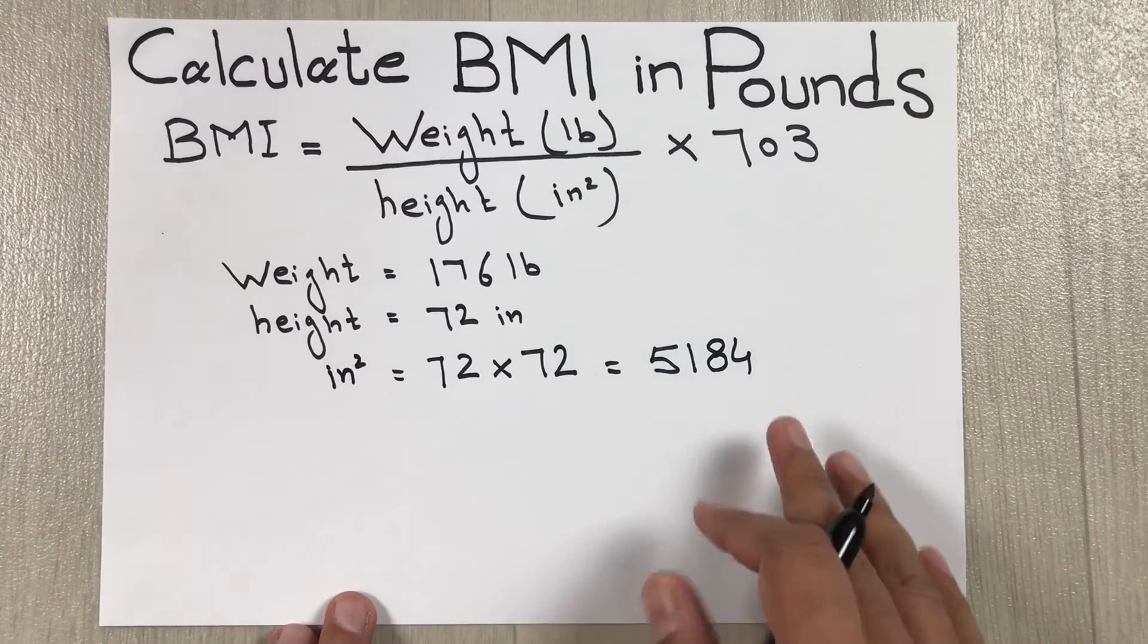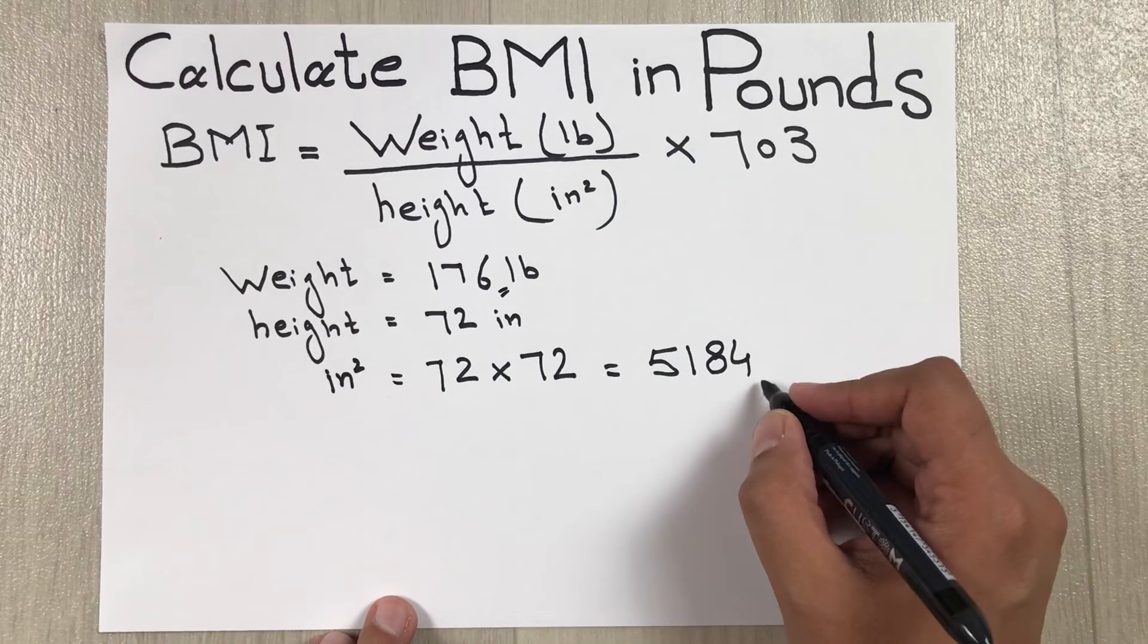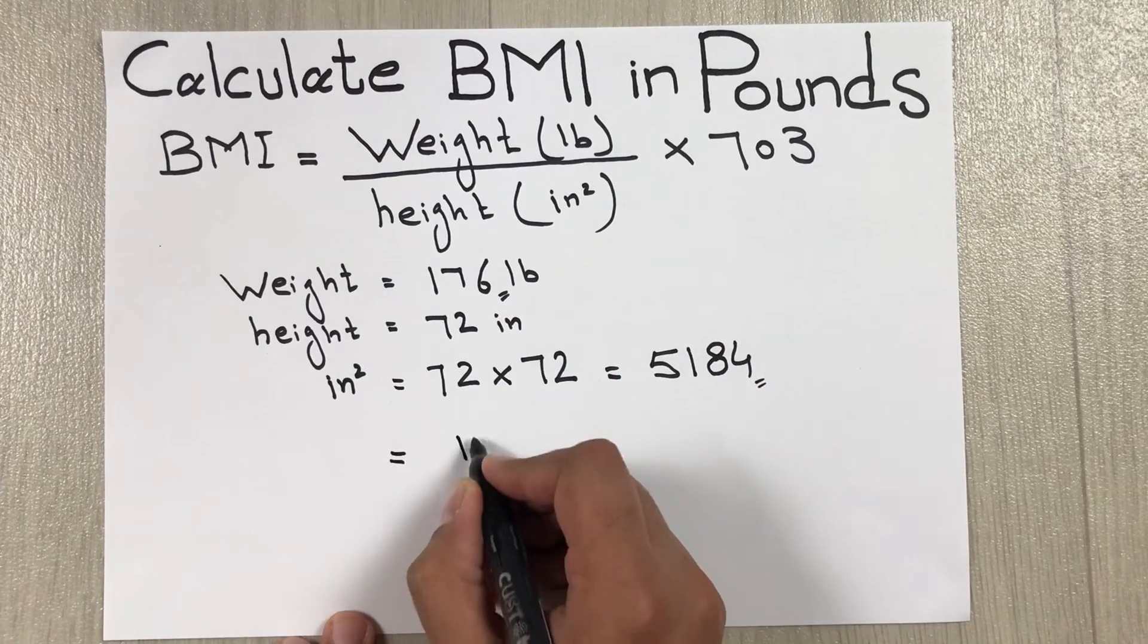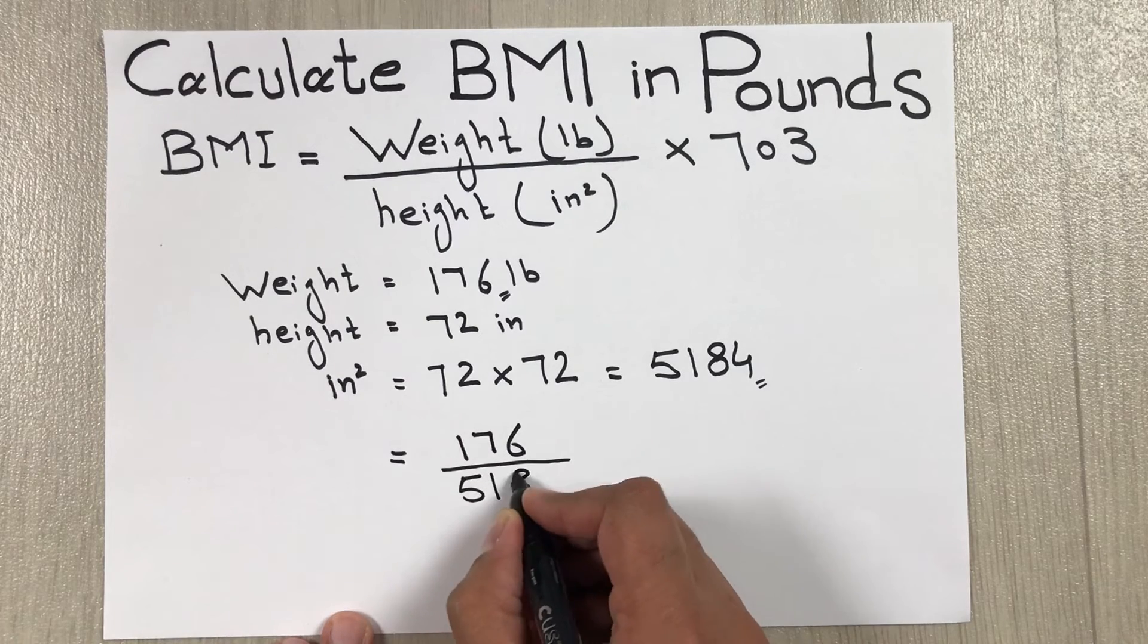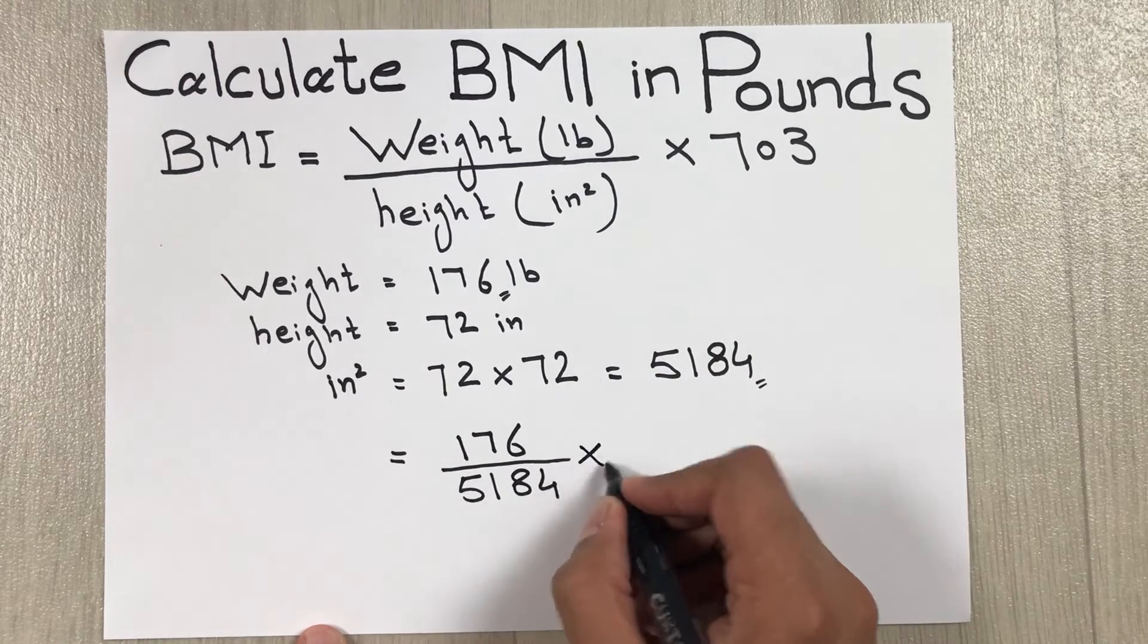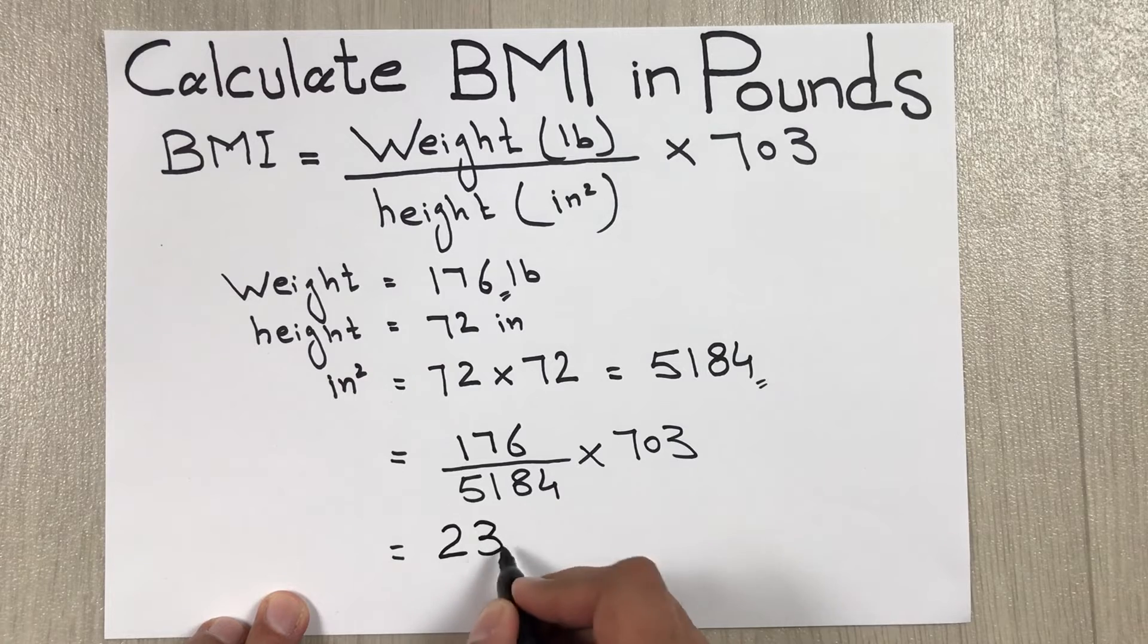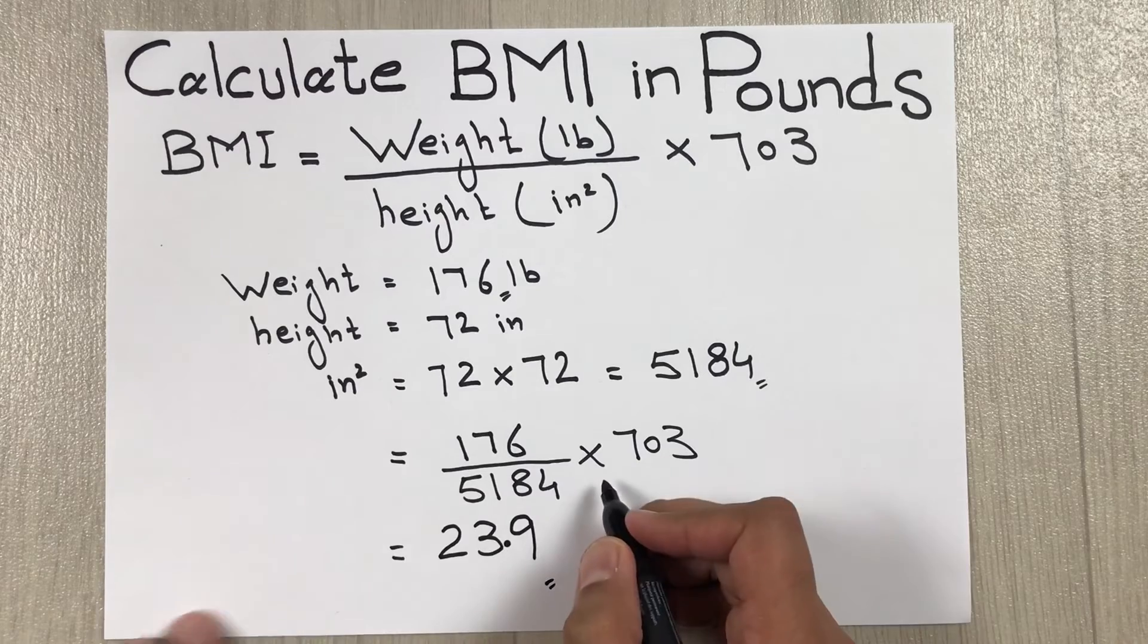Now simply we get our values. Our weight is 176 and our height is 5184. So simply we put the values in the formula. We will get our answer: 176 divided by 5184, and here we multiply 703. So we multiply it with 703, so our answer will be 23.9. So this is our BMI.